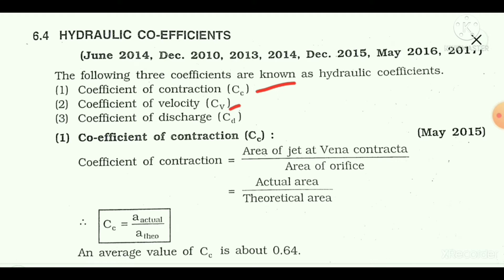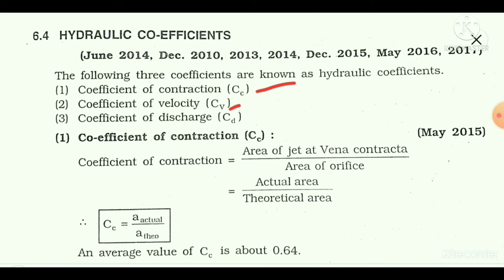What is the coefficient of contraction? The coefficient of contraction is defined as the ratio of actual area to the theoretical area. So what is the actual area and what is the theoretical area?